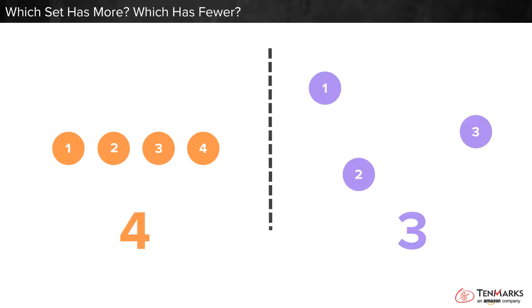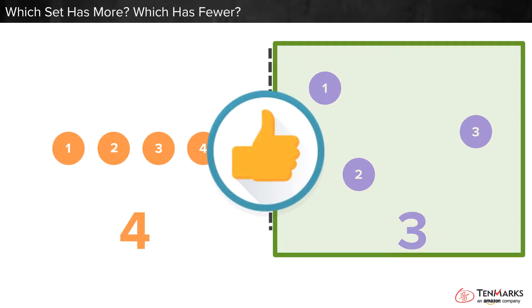Which group has fewer dots? Three is less than four, so the group with three has fewer, or less. We learned to compare sets of objects.